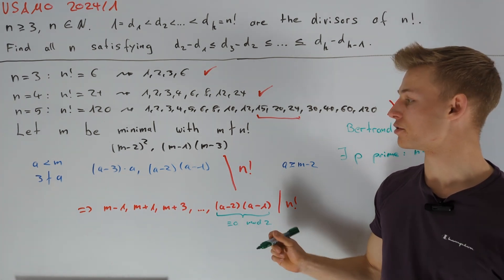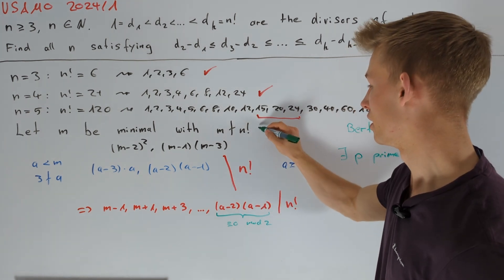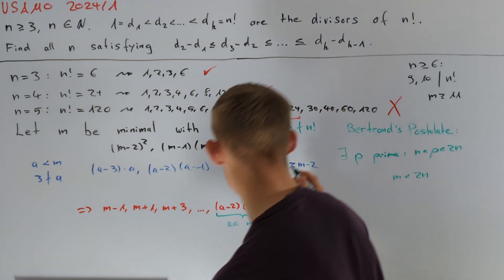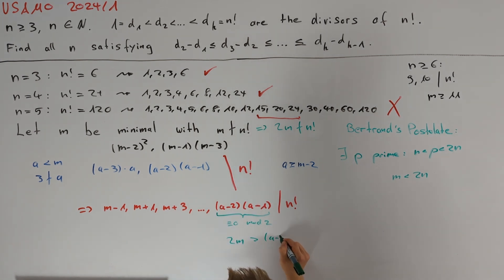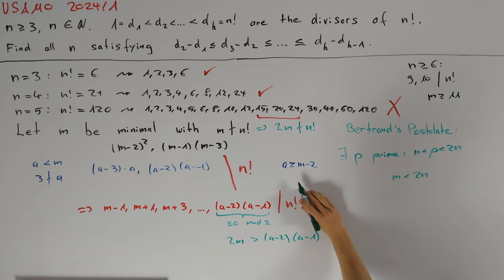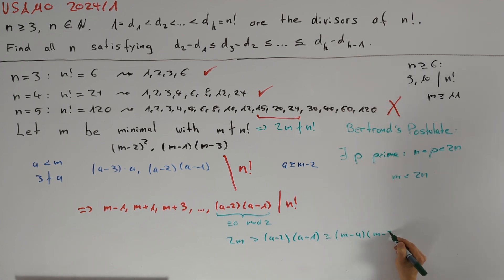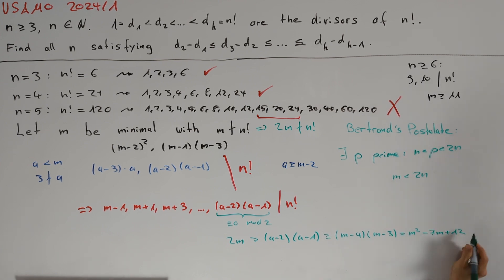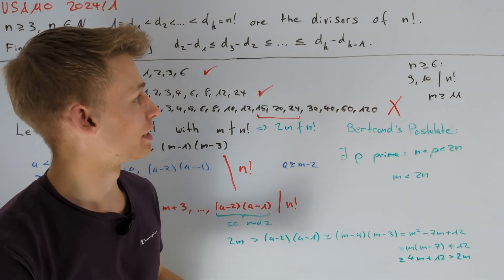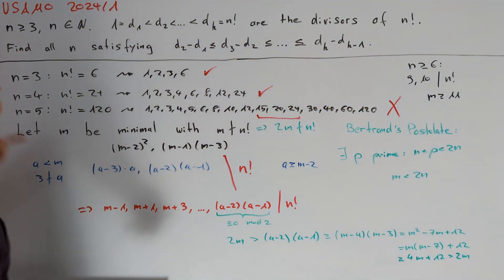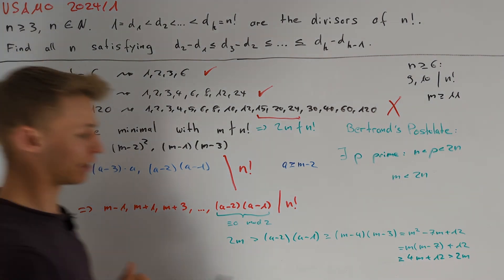On the other hand, m is not a divisor of n factorial, so 2m is also not a divisor of n factorial. Therefore 2m > (a−2)(a−1). Using a ≥ m−2, this gives 2m > (m−4)(m−3) = m² − 7m + 12, which is a clear contradiction. Therefore for n ≥ 6, the inequality condition cannot hold. Thus the only solutions are n = 3 and n = 4, and we are done.